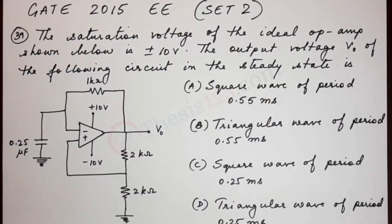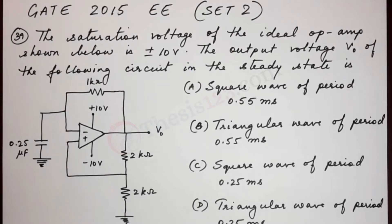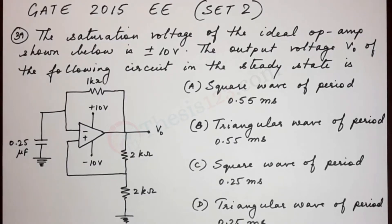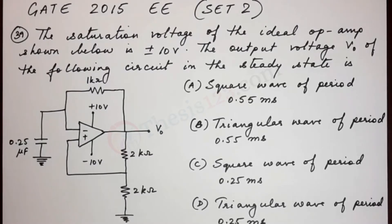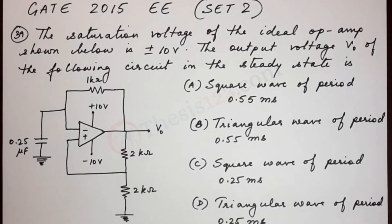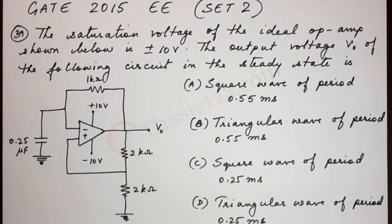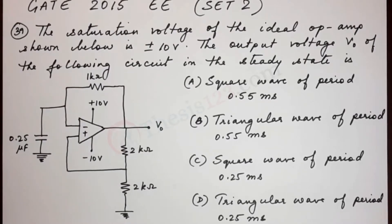Here's the next question, number 39. The saturation voltage of the ideal op-amp shown below is plus minus 10 volts. The output voltage V0 of the following circuit in the steady state is: (a) square wave of period 0.55 ms, (b) triangular wave of period 0.55 ms, (c) square wave of period 0.25 ms, and (d) triangular wave of period 0.25 ms.